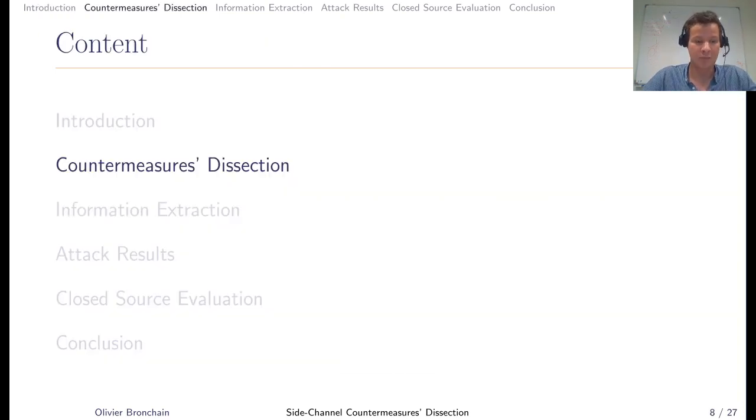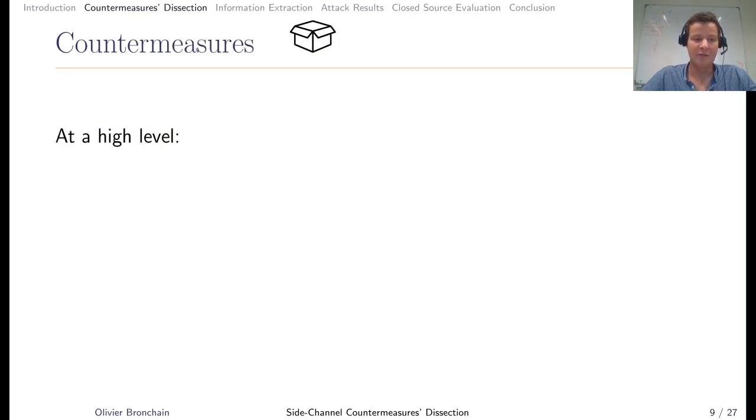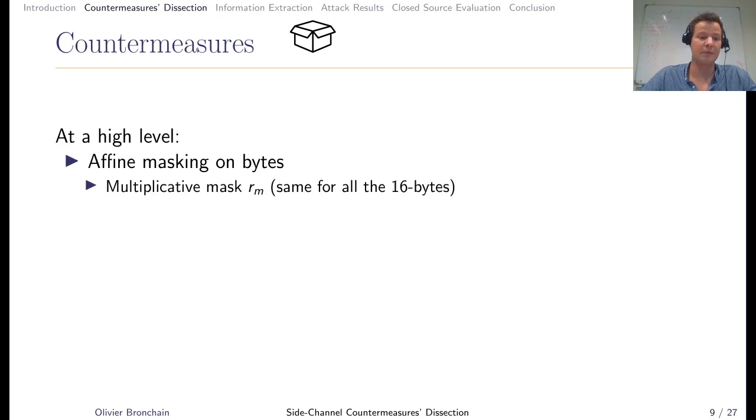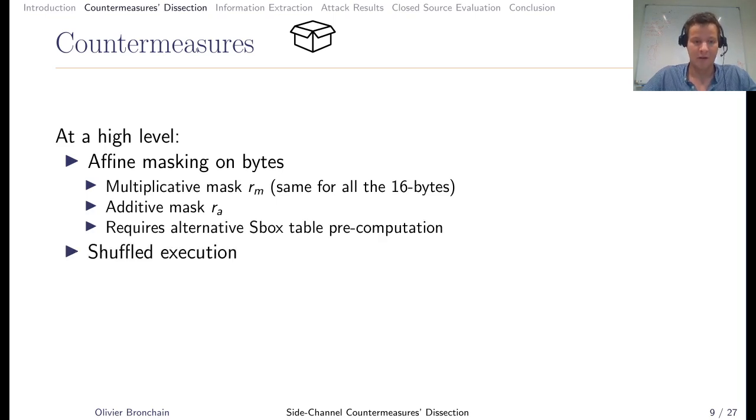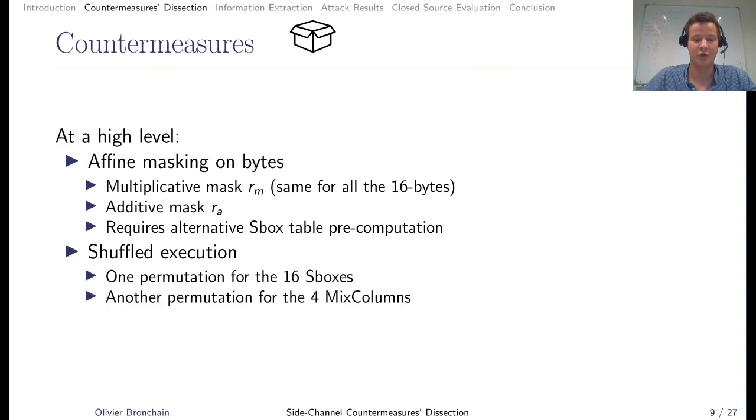Next, we will detail the countermeasures within that implementation. At a high level, this implementation contains two countermeasures. The first is affine masking. It involves a multiplicative mask that is the same for all 16 bytes for optimization reasons. It also requires an additive mask which is different for all 16 bytes, and requires an alternative S-Box precomputation. The second countermeasure is shuffled execution, where there is one permutation among all 16 S-Boxes and one other permutation on the four mix columns. Both permutations are precomputed.